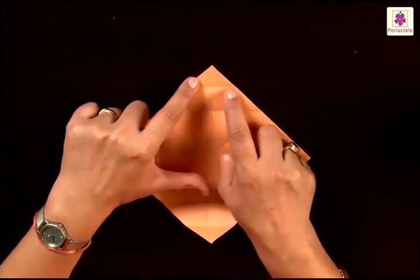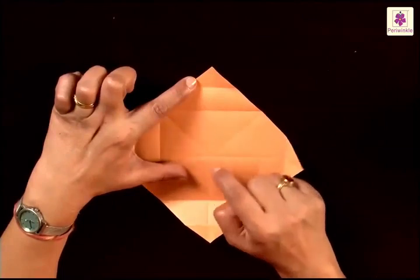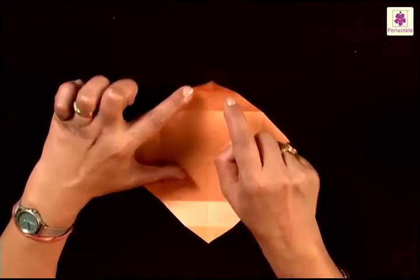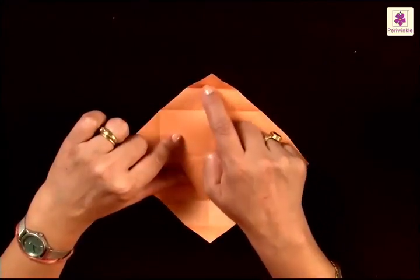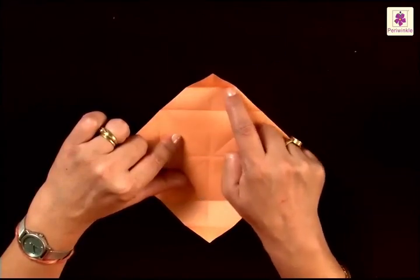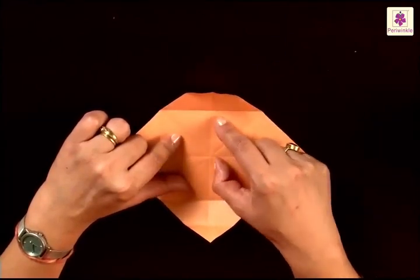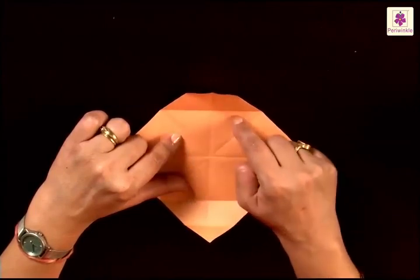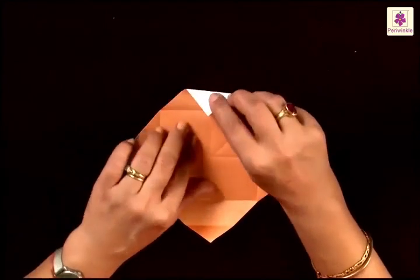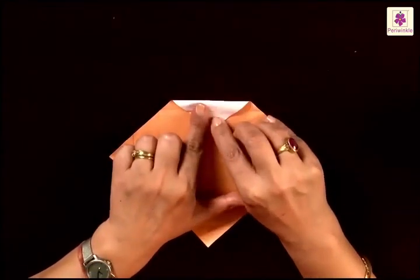One is immediately next to the corner and another one which is closer to the center point. Let's call this one which is next to the corner the first line and the next one which is closer to the center point as second line. Now fold the first line to the second line.